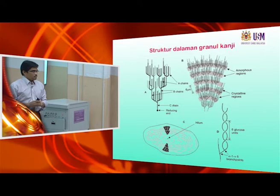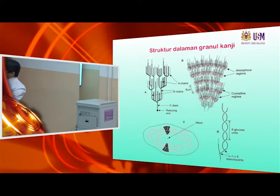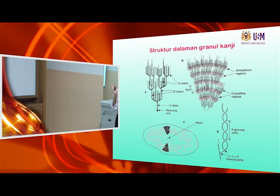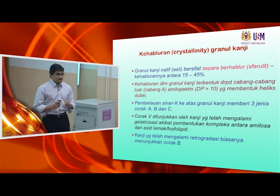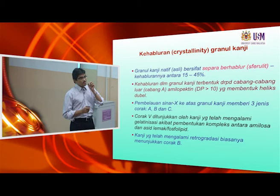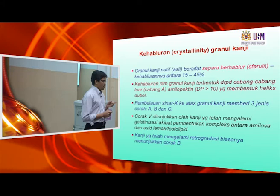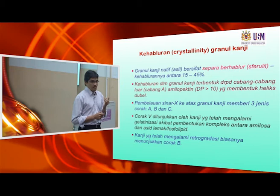There is a different view of how we can understand the growth ring structure in the granule. We have to understand the different models — this model is based on the Hizukuri model of amylopectin. Starch has a semi-crystalline structure, not 100% crystalline. The crystalline domain in the granule is the amylopectin, and amylose forms the amorphous phase. The crystalline phase is on average between 15 to 45%.